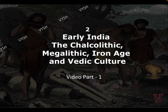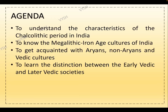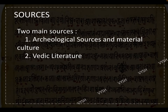We shall start. Today we are going to study Chapter 2: Early India — the Chalcolithic, Megalithic, Iron Age, and Vedic Culture. The agenda covers the characteristics of the Chalcolithic period in India, the Megalithic Iron Age cultures of India, Aryans, non-Aryans and Vedic cultures, and the distinction between the early Vedic and later Vedic societies.